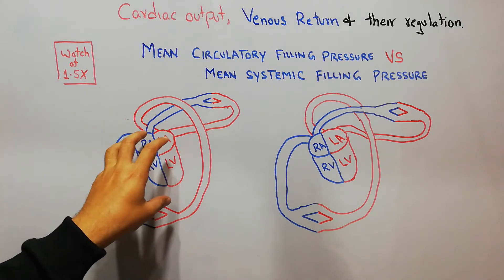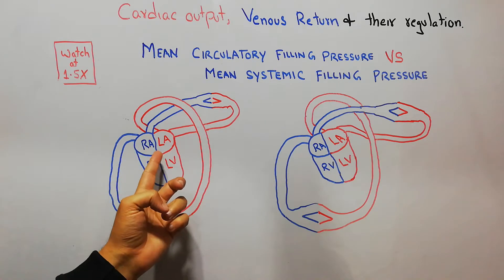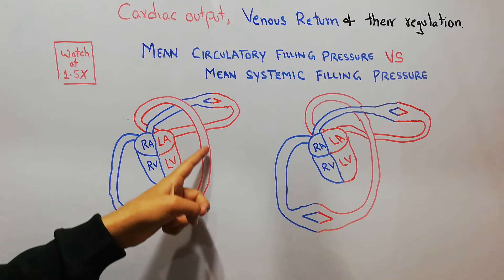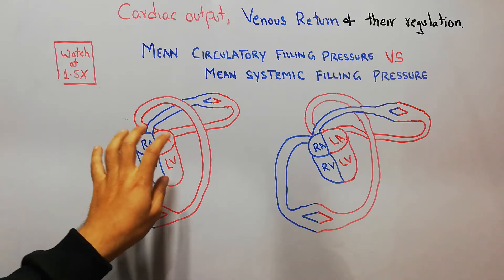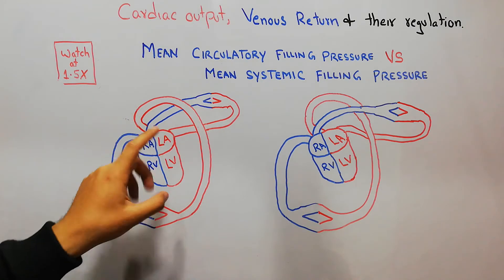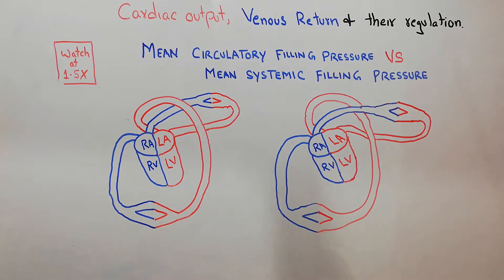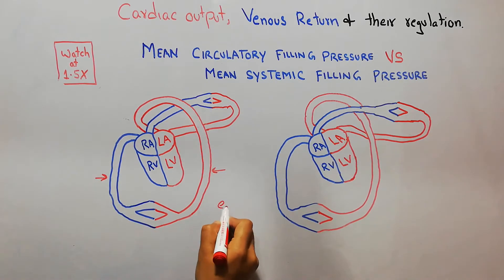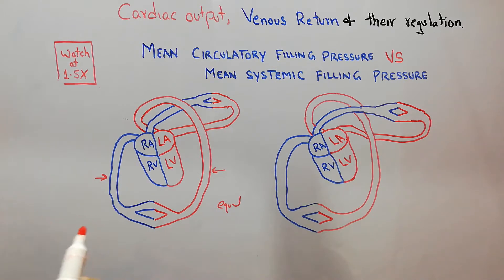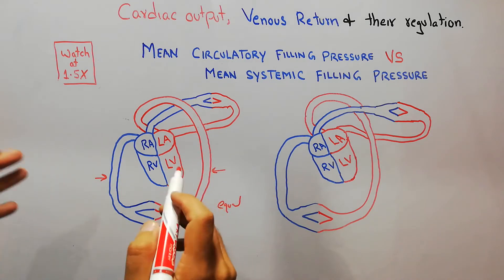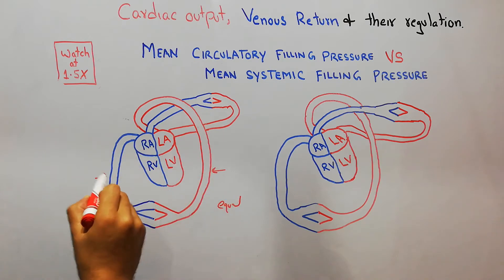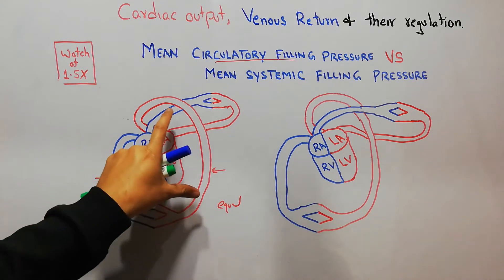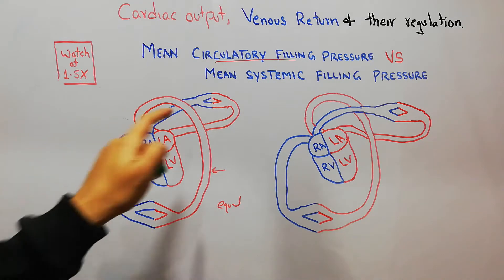When the pumping of the heart is stopped, the heart is no longer pumping blood. After stopping the heart, blood flow in the vessels ceases after a few seconds. Once blood flow has stopped, the pressure on the arterial side and the venous side becomes equal. That pressure — the point at which arterial and venous pressures equalize — is known as the mean circulatory filling pressure.